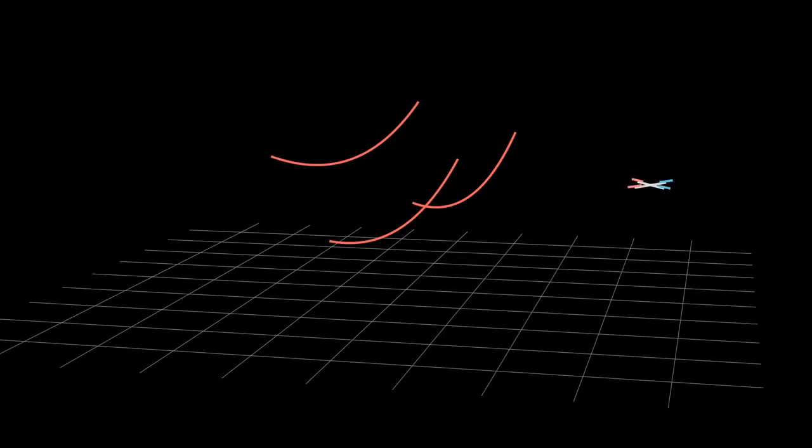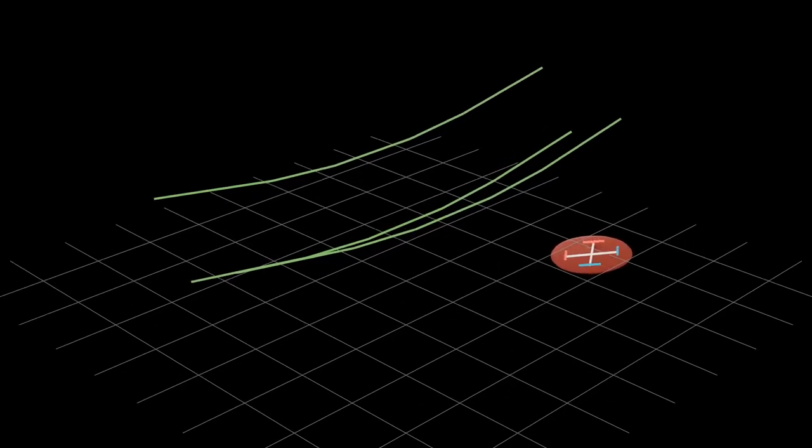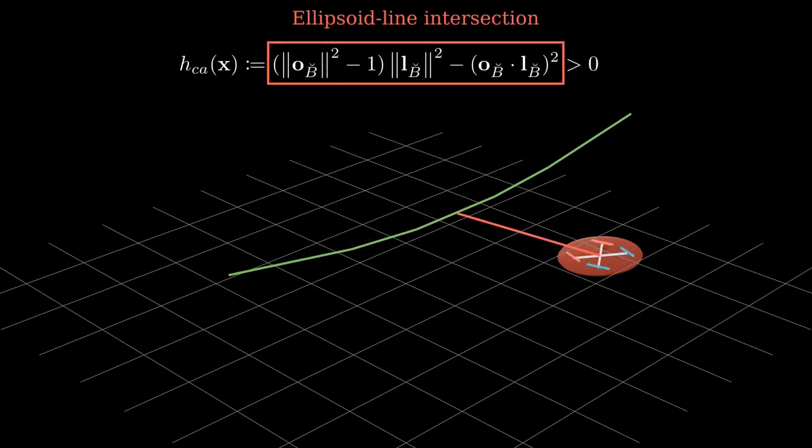To efficiently represent the perching problem, we model the power lines as sets of segments and the quadrotor as an ellipsoid volume. This way, the distance between a quadrotor and a segment can be modeled in closed form.